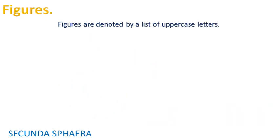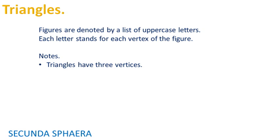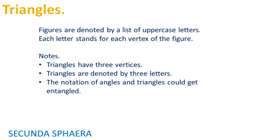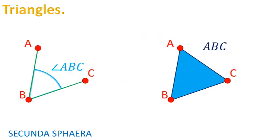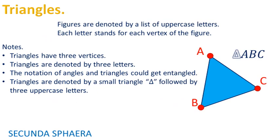Figures are denoted by a list of uppercase letters. Each letter stands for each vertex of the figure. However, triangles have three vertices, and hence triangles are denoted by a list of three letters. In order to not mix the notation of angles and triangles, triangles are denoted by a small triangle symbol followed by three uppercase letters.